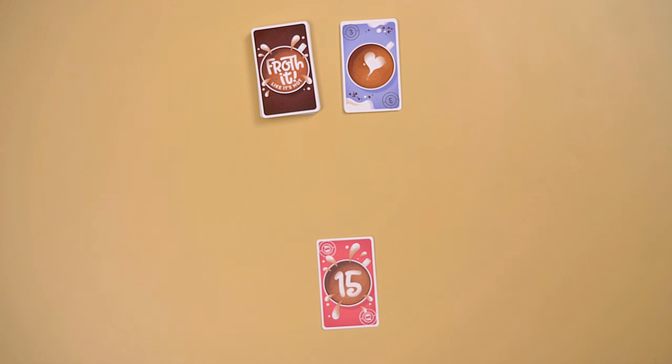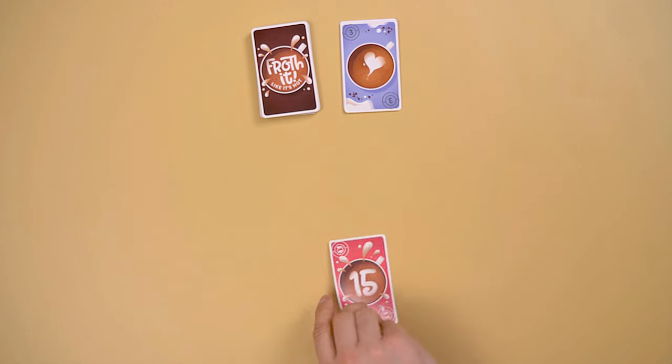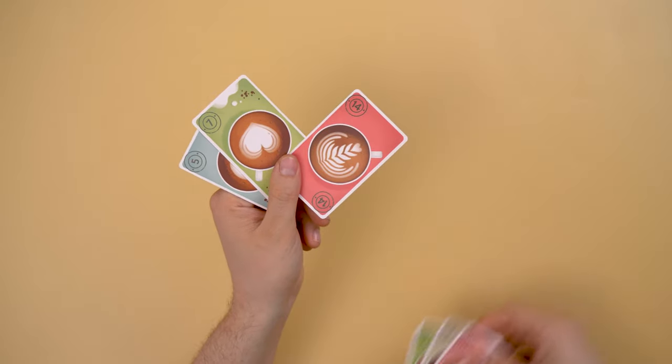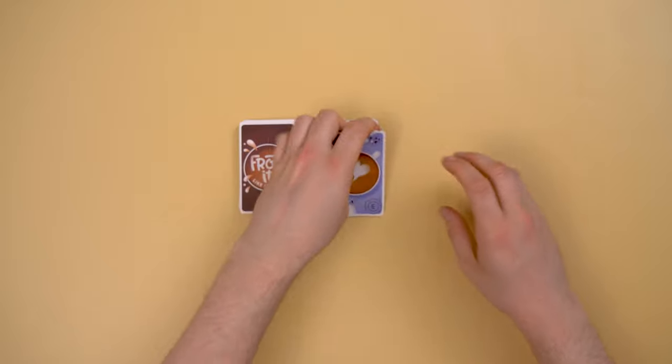At the end of your turn, redraw to seven cards. Play continues to the next player. Once per round, you can discard and refill your hand. To do this, flip over your 15 card to use your refill token.